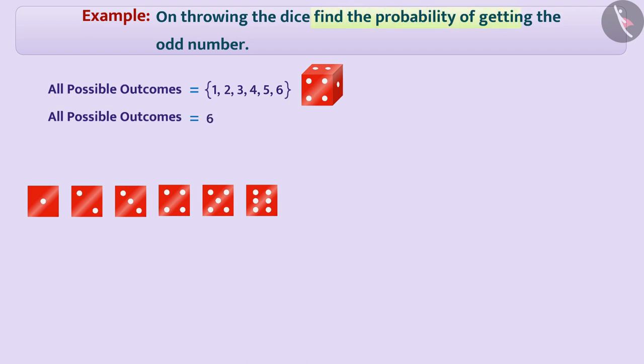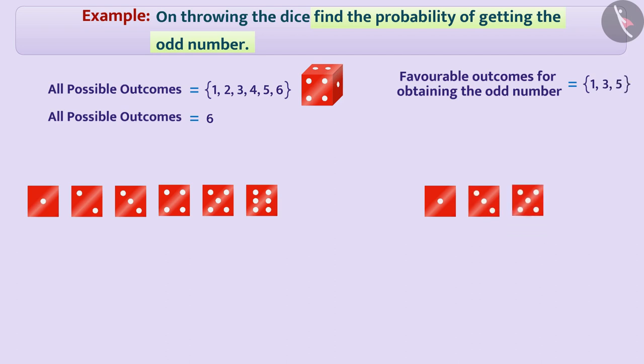Here, we have to find out the probability of getting the odd number. Favorable outcomes for obtaining the odd number is 1, 3, 5. In this way, for getting the odd number, the number of favorable outcomes is 3.